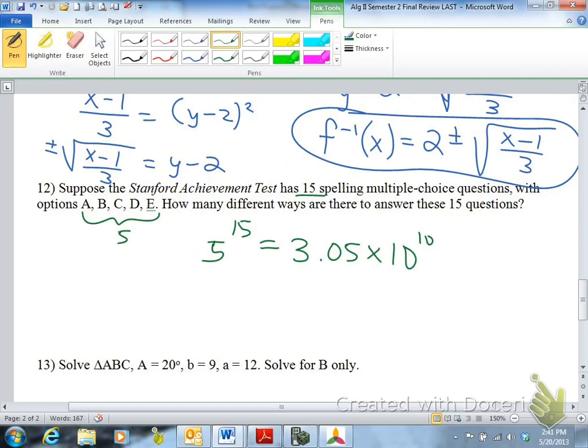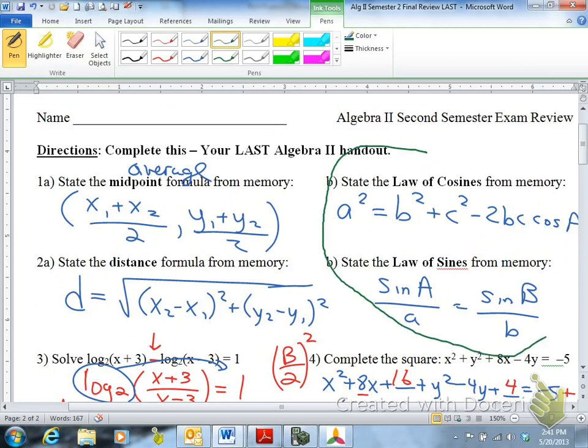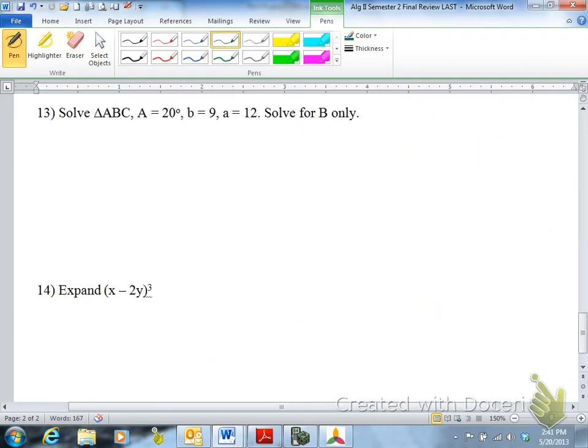Number 13 is pretty recent material. This is when you'll use either law of sines or law of cosines. One of these two. Or both sometimes. So draw the triangle. A, B, C. A is 20 degrees. Across from B is 9. Across from angle A is 12. This is side-side angle case. Side-side angle will be law of sines. If you just try to set up law of cosines, you're going to have too many variables. So in this case, the directions say solve for B only.